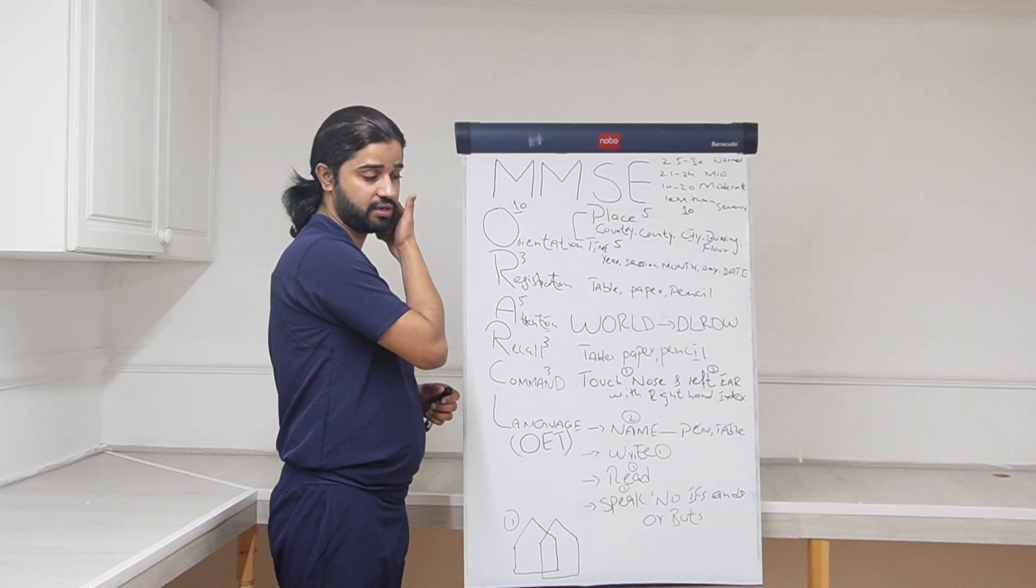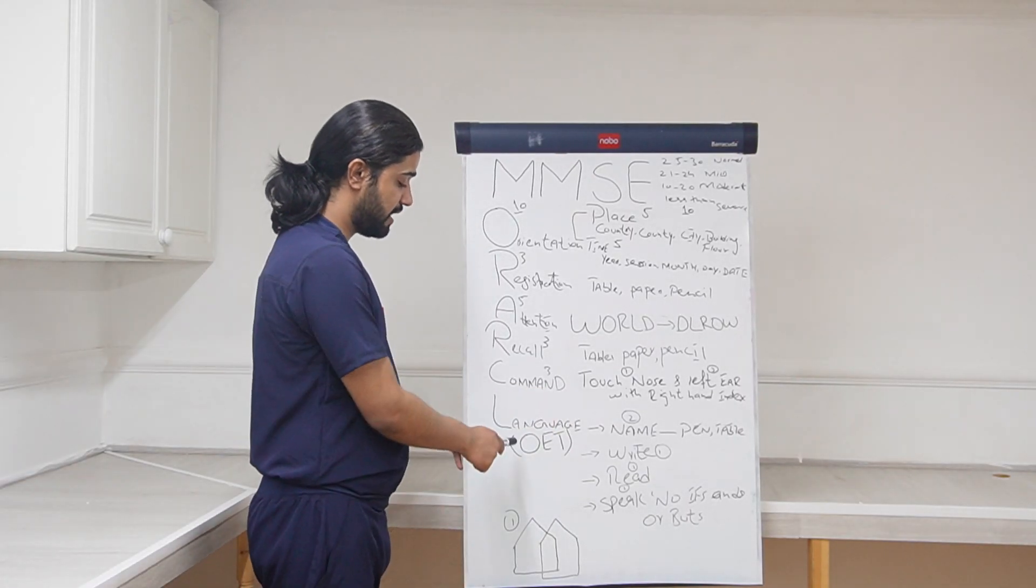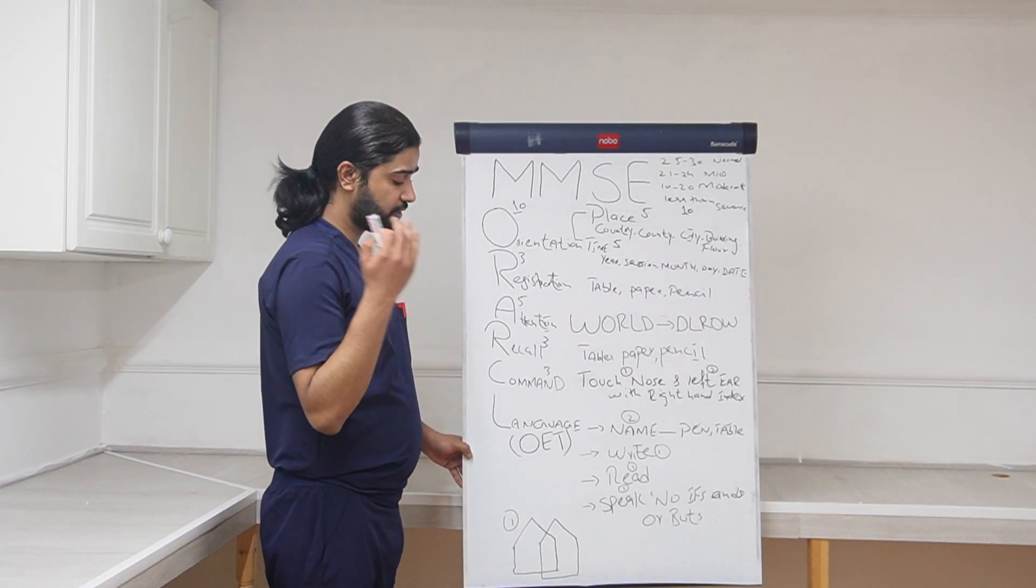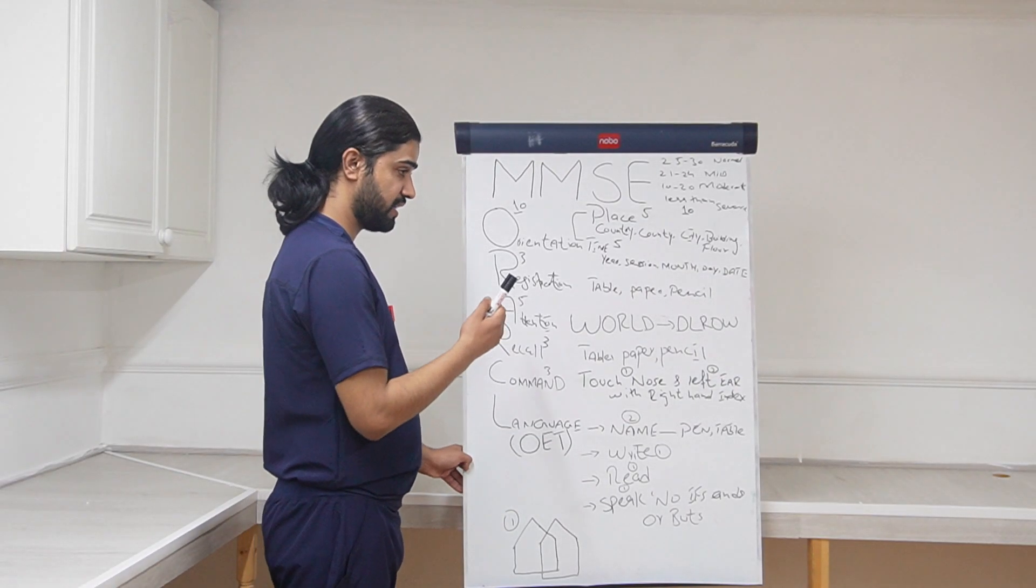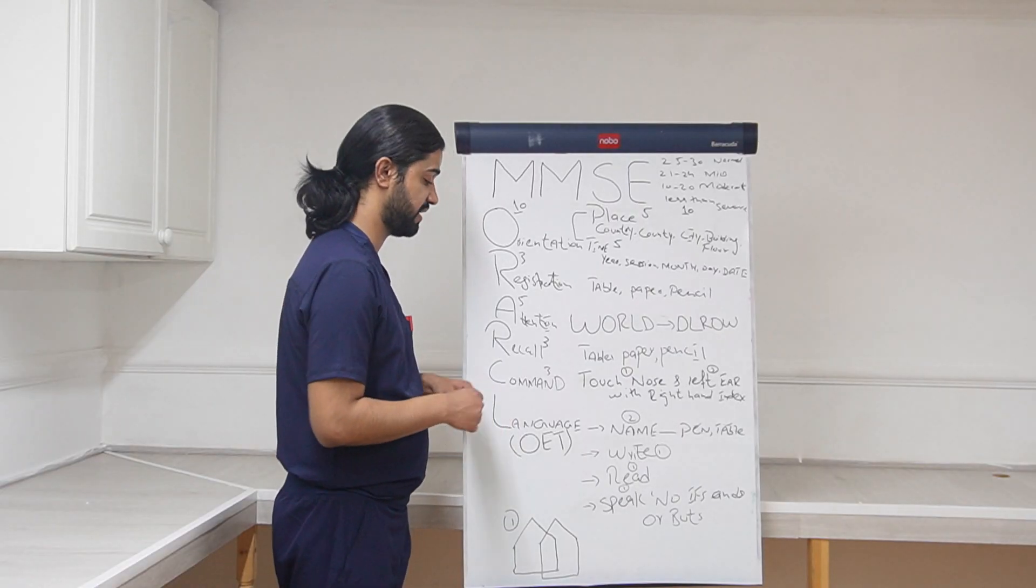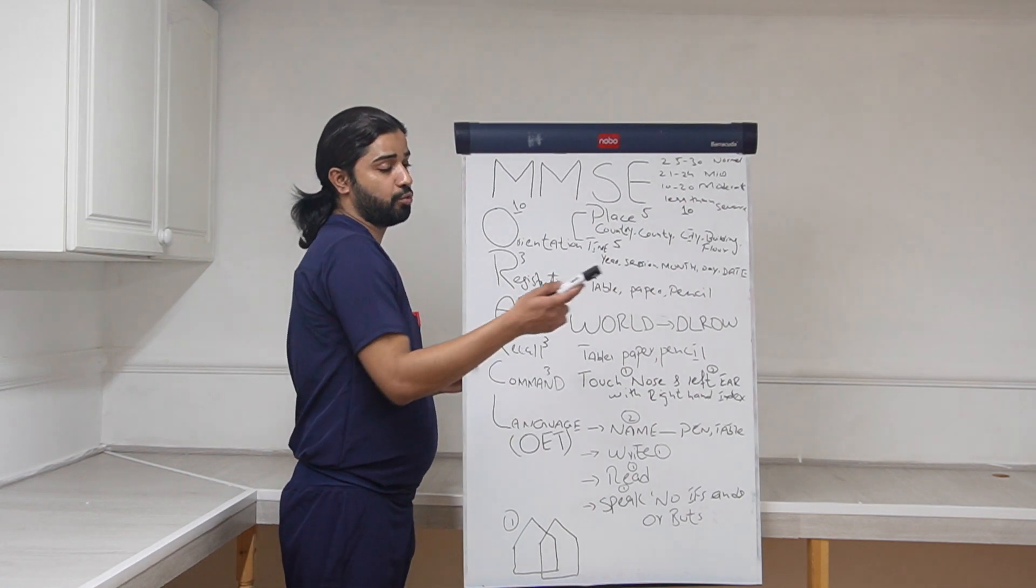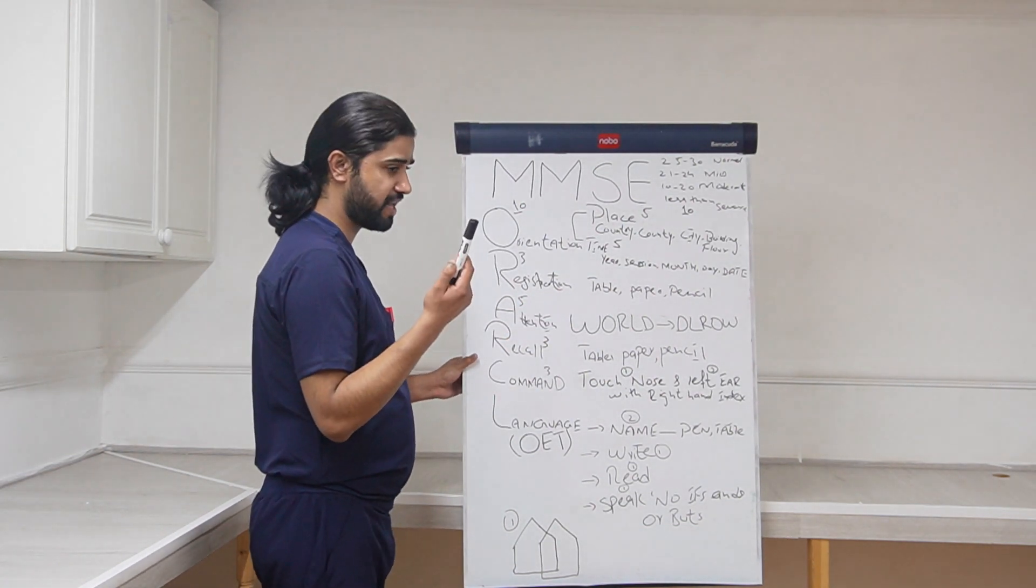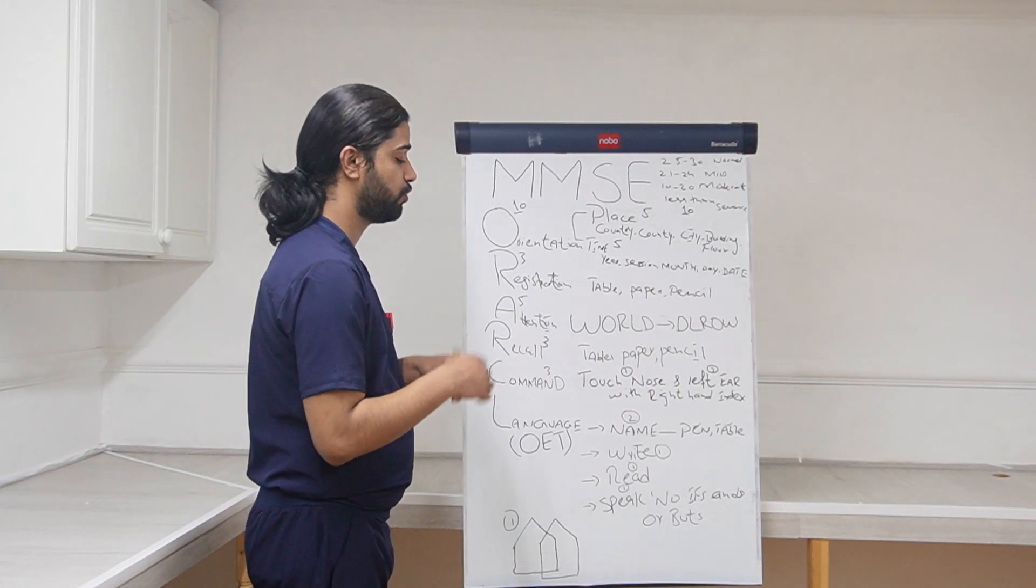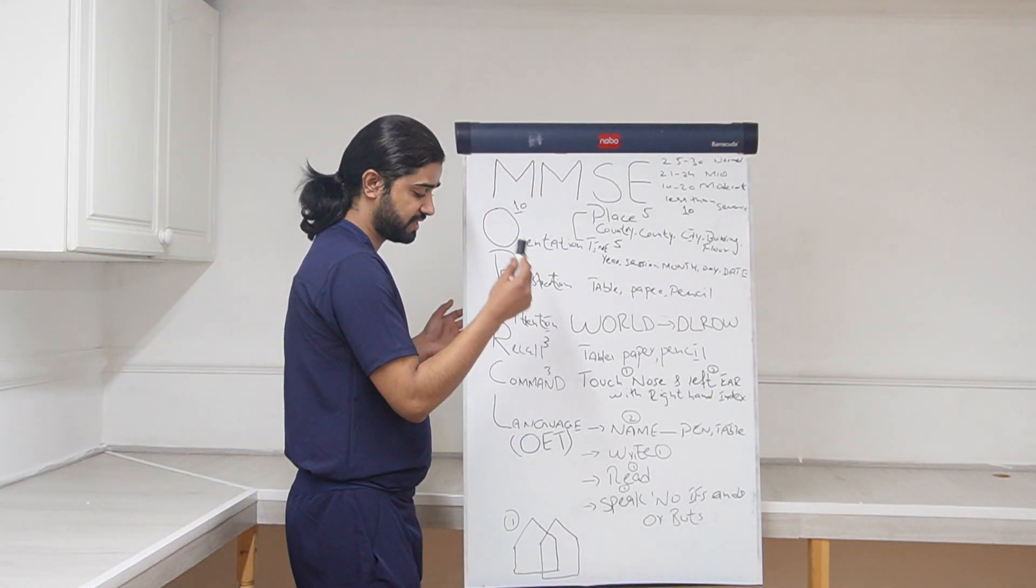Next is, doctors, language. Language you can remember simply and easily by OET, because OET has four parts: speaking, reading, listening, and writing. So here we are covering it. First, doctors will ask the patient to name two objects. Just show him two objects. You can show pen, you can show table, chair, and ask him to name. If he is able to name, give him two marks. In language, ask him to name two objects and give him two marks.